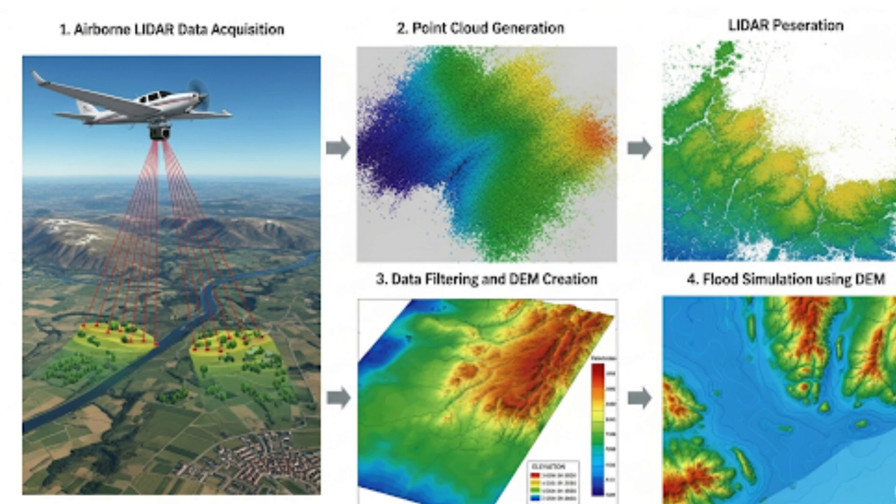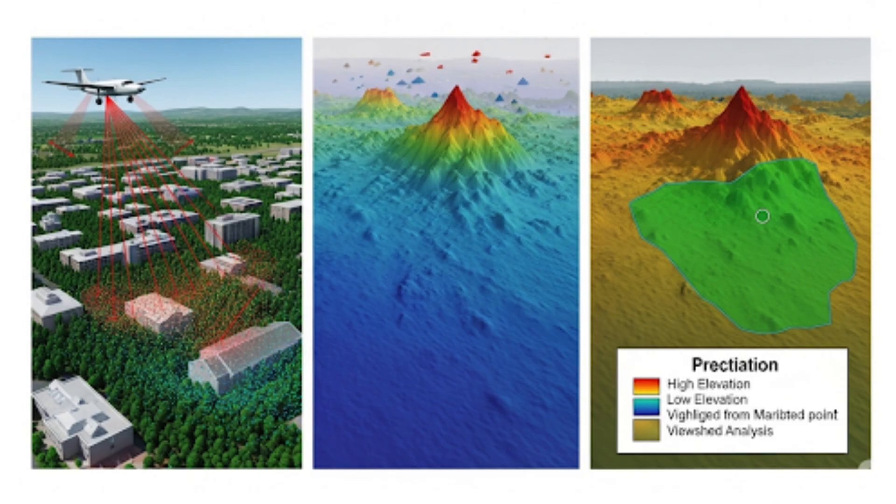A DSM is created from the highest LiDAR returns and represents both the ground, or bare Earth, and the highest point of objects, such as tree canopies and building roofs. A DSM can be used to create 3D visualizations and as input to analysis workflows such as landslide modeling, vegetation density analysis, and viewshed analysis.